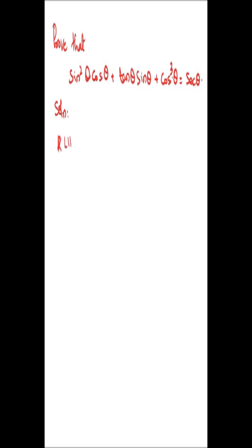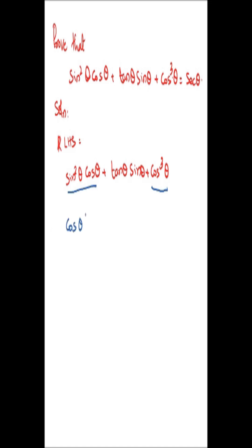RHS, LHS is equal to sine squared theta cosine theta plus tan theta sine theta plus cosine squared theta. From this step, we will take cosine theta as common, that is equal to cosine theta into sine squared theta plus cosine squared theta plus tan theta sine theta.